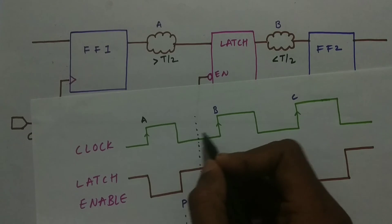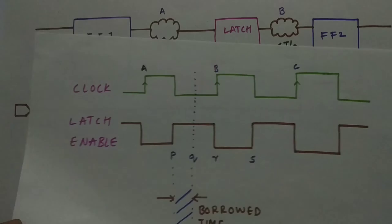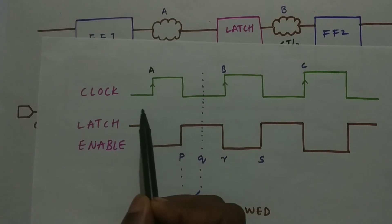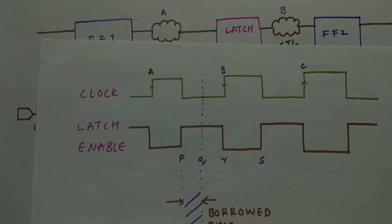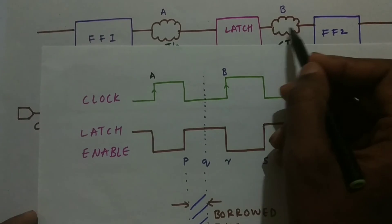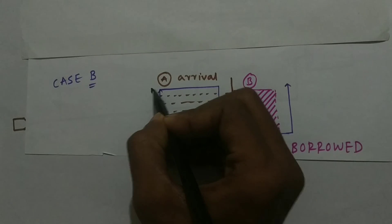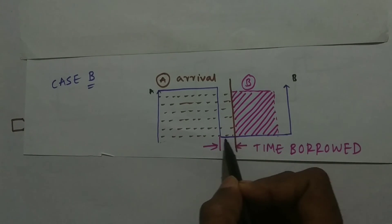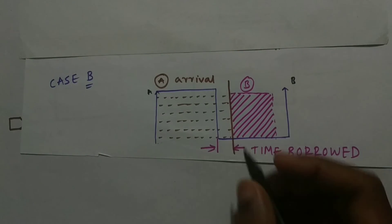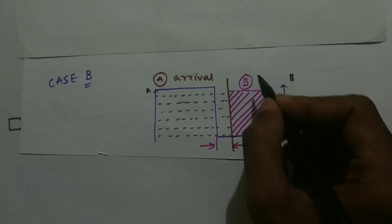The latch is transparent in the window P to Q, so there is no problem receiving the late data. However, whatever time is borrowed in this window is subtracted from the latch-to-flip-flop-2 path. Before, we were checking setup for flip-flop 1 to latch from A to P, but now due to the borrowed time, setup has shifted from A to Q. The logic from latch to flip-flop must therefore be small enough to send the data within the reduced time. As you can see in the diagram, the delay of logic A is higher than T/2, so data arrives in the off window, but the latch is transparent and passes it through, leaving only the remaining time for logic B.